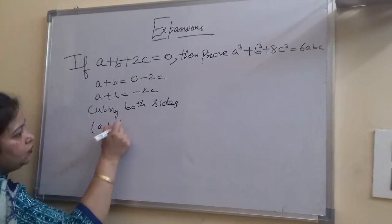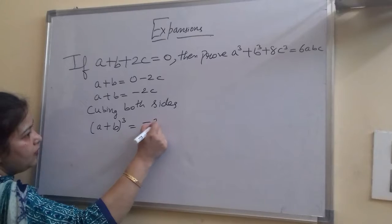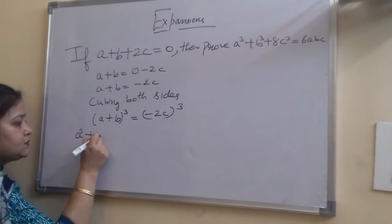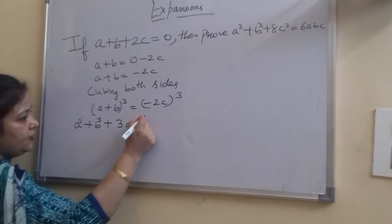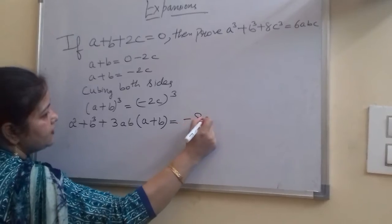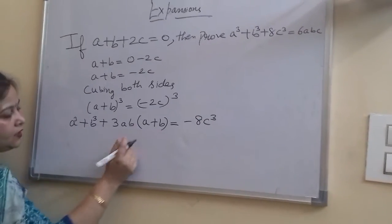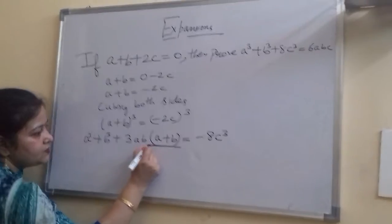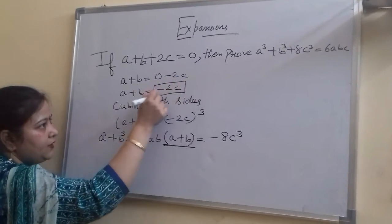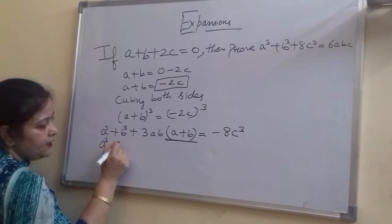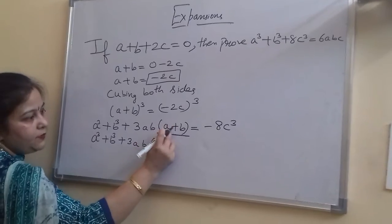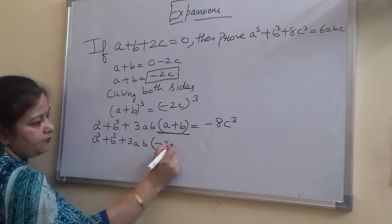Cubing both sides: a plus b whole cube equals minus 2c whole cube. Expanding: a cube plus b cube plus 3ab into a plus b equals minus 8c cube. Now, substituting the value of a plus b which is equal to minus 2c.